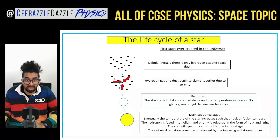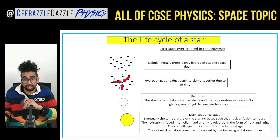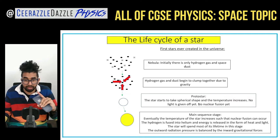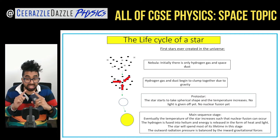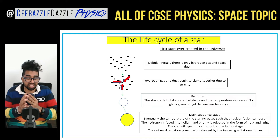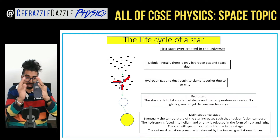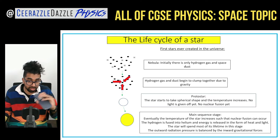The life cycle of the stars. Initially there is hydrogen dust and gas. Then gravity acts upon it and brings it together — it starts to clump together. Eventually it takes the shape of a protostar, which is spherical, and the temperature starts to increase. No light is given off yet and there's not enough temperature for nuclear fusion to occur. Then it becomes a main sequence star when the temperature is hot enough and nuclear fusion occurs — hydrogen is being fused into helium, releasing energy in the form of heat and light.